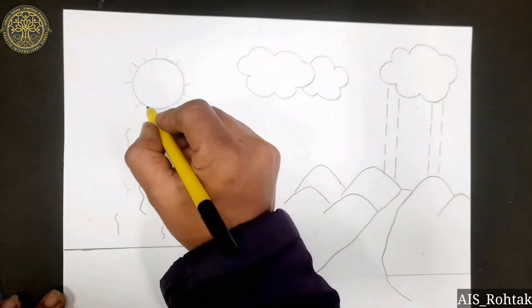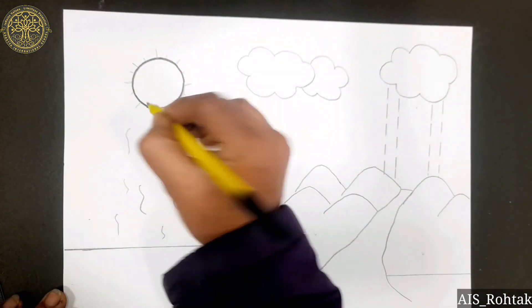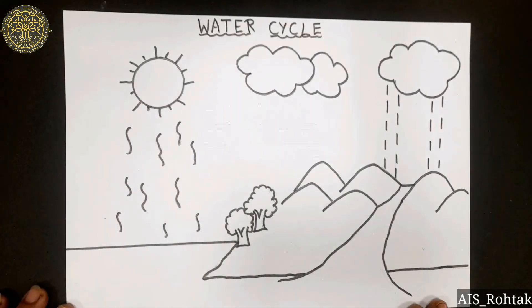Do the outline with black sketch pen. Label them.